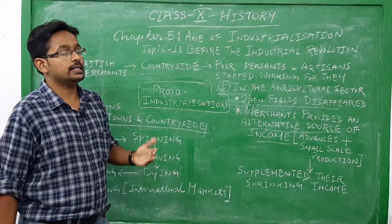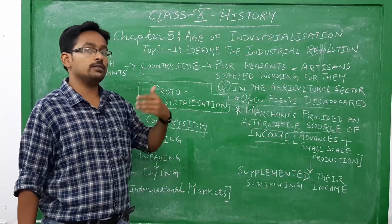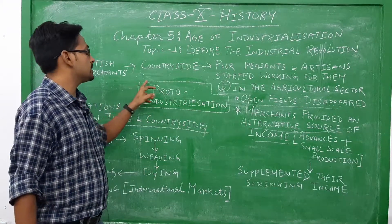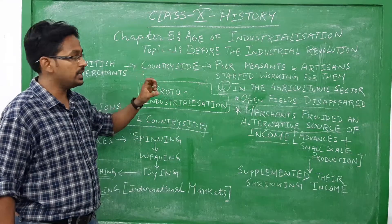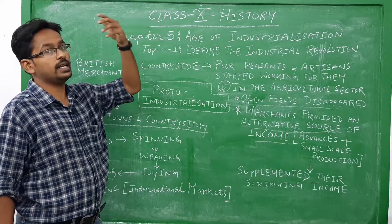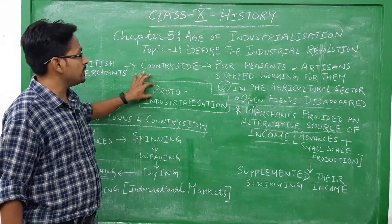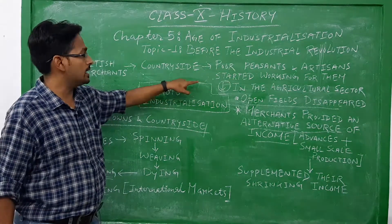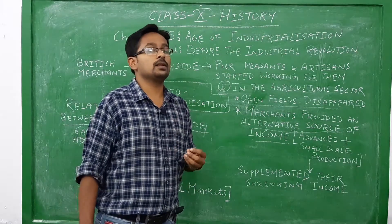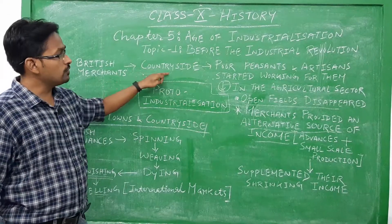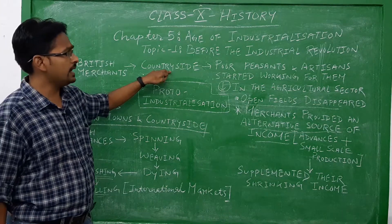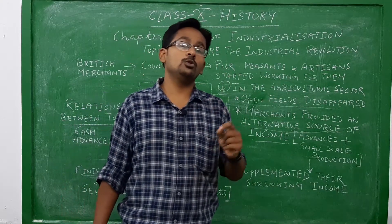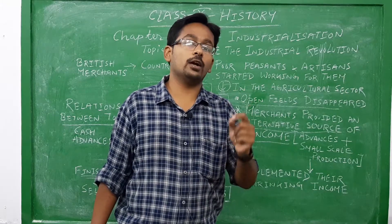Historians described the early phase of industrialization as proto-industrialization. Today's topic is about proto-industrialization. 'Proto' means early, first, or primitive. So historians referred to the phase before the industrial revolution as proto-industrialization. In this system, British merchants moved to the countryside, offered money to poor peasants and artisans, and persuaded them to manufacture for an international market.